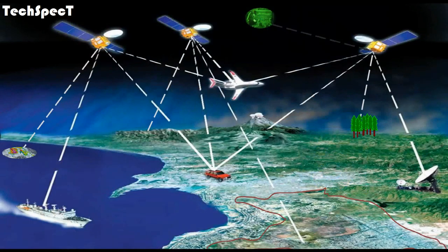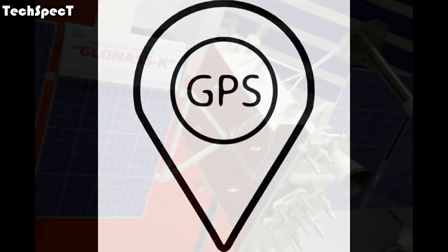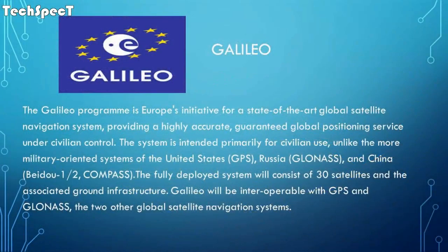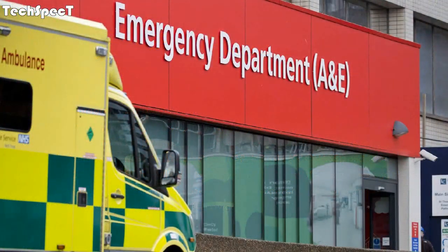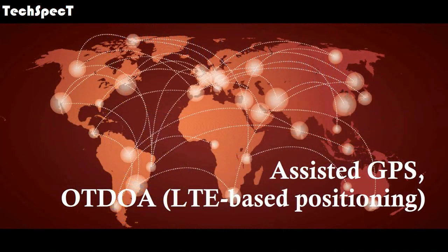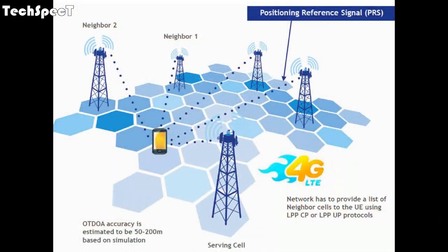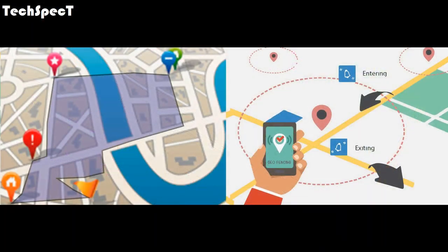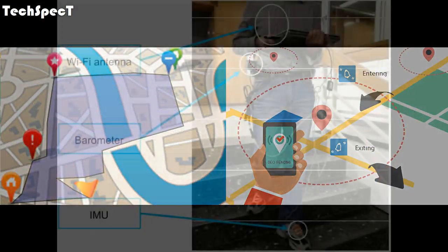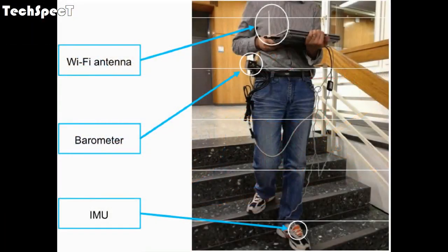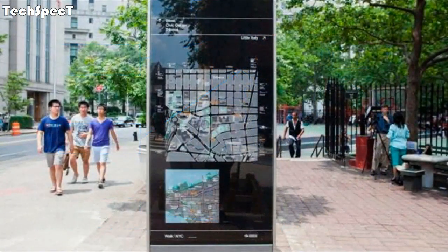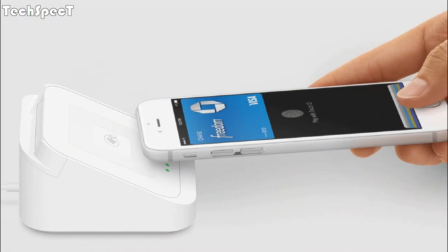Satellite systems support: GPS, GLONASS, BeiDou, Galileo, QZSS, SBAS. Global emergency services support: Assisted GPS, OTDOA, LTE-based positioning. Advanced location features: low-power geofencing and tracking, sensor-assisted navigation, pedestrian navigation. Near-field communications (NFC): supported.